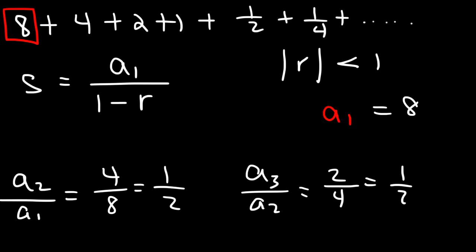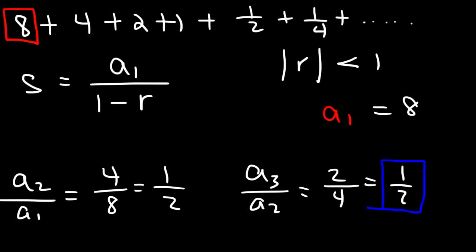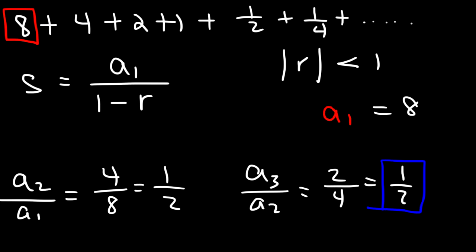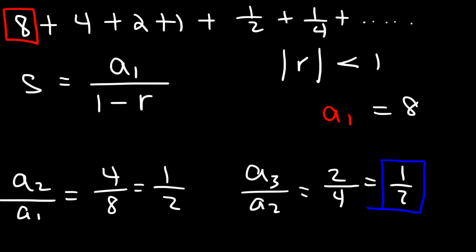So the common ratio, which is 1 half, is indeed less than 1. Therefore, we can use this formula to determine the sum. The series will converge to a specific value. If r was greater than 1, then you cannot find the sum of this infinite geometric series — it can keep getting higher towards positive values, or keep getting lower towards negative values.